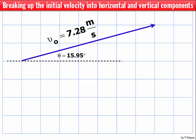So here's how it's done. Typically what will happen is, for a projectile motion problem, you'll be given the initial velocity at an angle like what's drawn here, with an initial velocity of 7.28 meters per second and the angle of 15.95 degrees. Now I've got to break this up into horizontal and vertical pieces. In other words, I've got to make this into a right triangle.